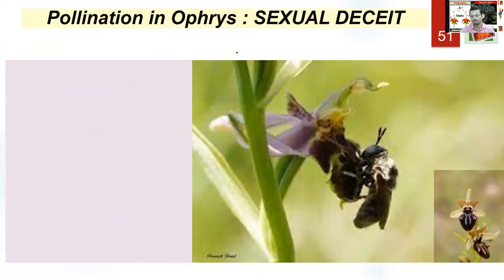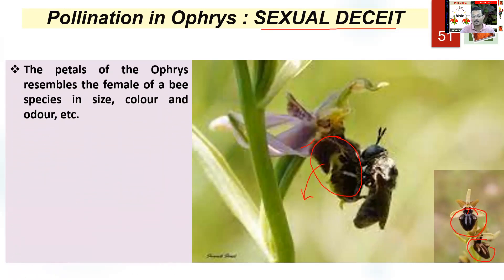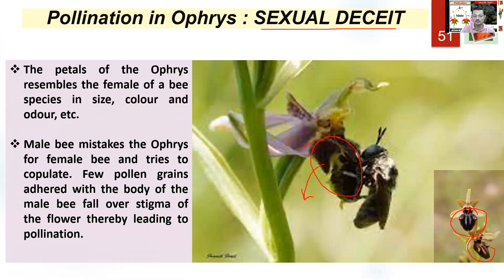Another important type of pollination is sexual deceit — called 'dhokha' (deception). This is the Mediterranean Ophrys. One of its petals looks exactly like a female bee. A male bee mistakes the Ophrys petal for a female bee and tries to copulate. In doing so, pollen adheres to the body of the male bee and falls onto the stigma of the next flower, thereby leading to pollination. This is a beautiful example of co-evolution.